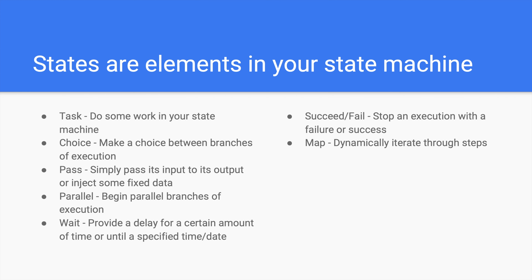Many different AWS services can be defined as a task and be integrated with Step Functions. Commonly these are services like Lambda, DynamoDB, SQS, SNS, AWS Batch, and even more specialized AWS services like AWS Fargate, AWS Glue, AWS SageMaker, and many more. A choice state adds branching logic to a state machine — it sets out options for which path you want your input to be directed based on the value of a certain variable. A pass state just passes its input to its output without performing any work.